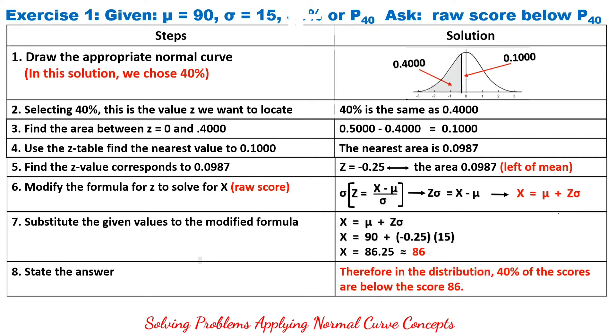Therefore, in the distribution, 40% of the scores are below the score 86.